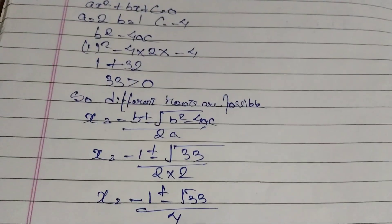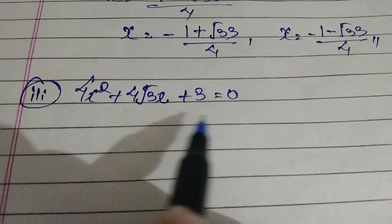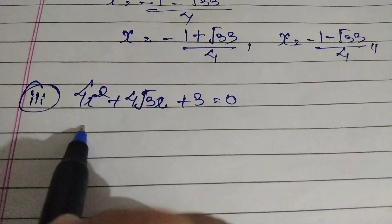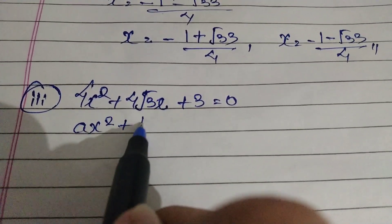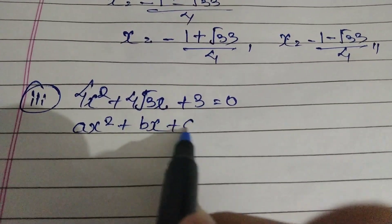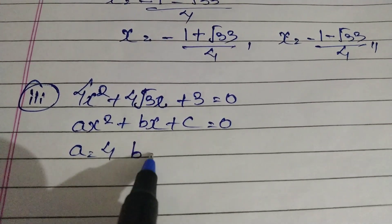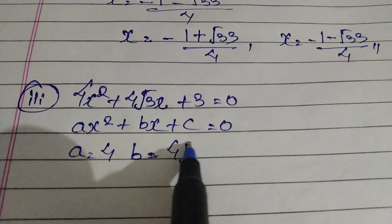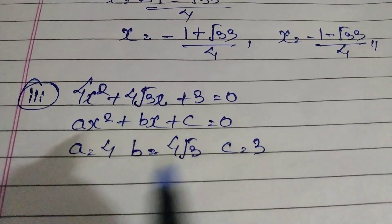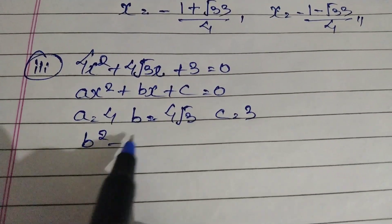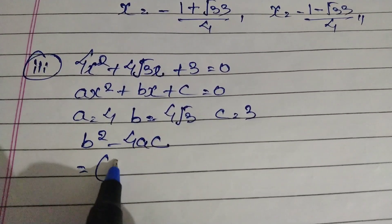Let's solve serial number 3. Let's compare it with the standard equation ax² + bx + c = 0. Here a is 4, b is 4√3, and c is 3. Now applying the discriminant formula: b² minus 4ac, where b is 4√3.